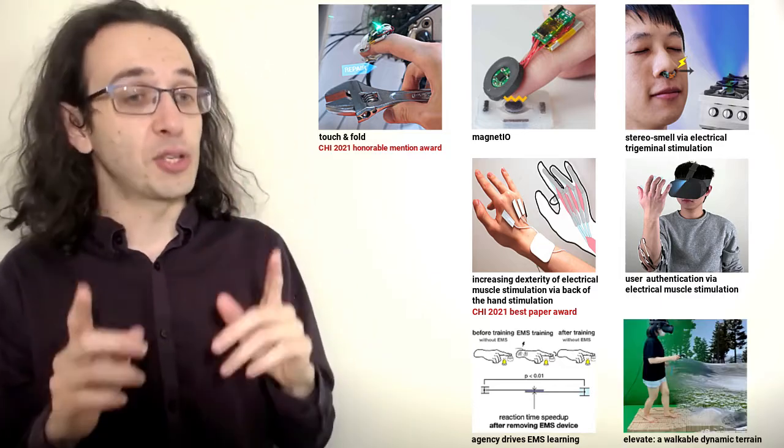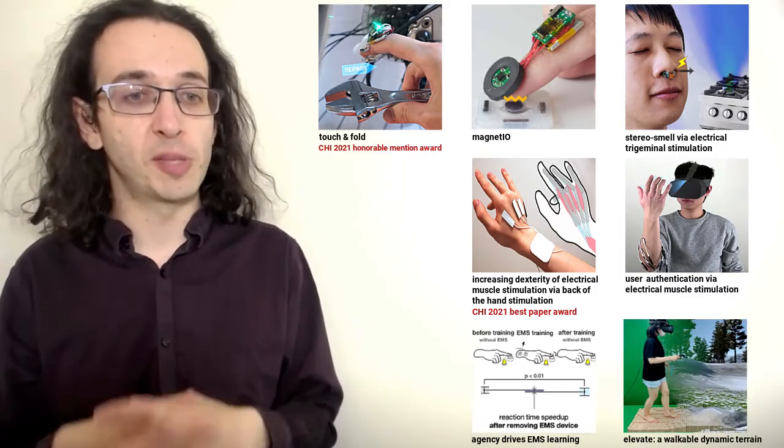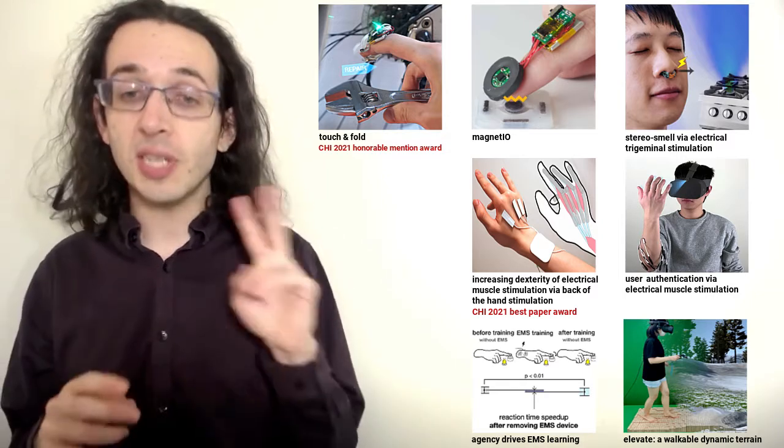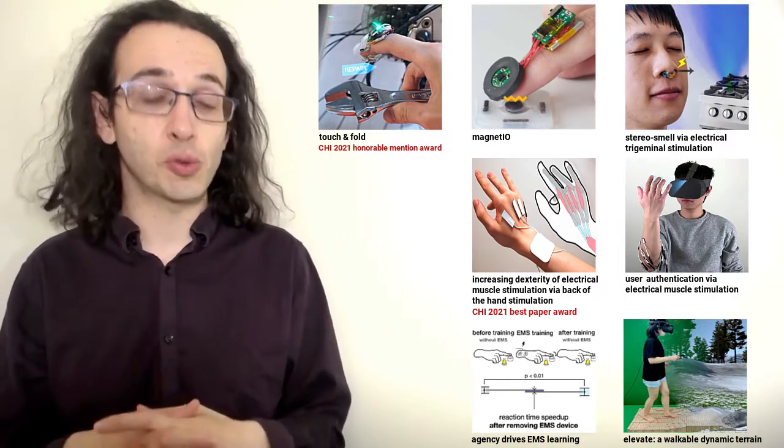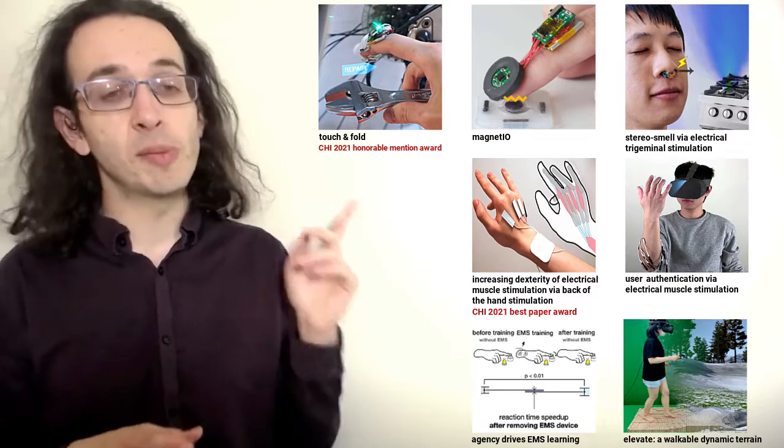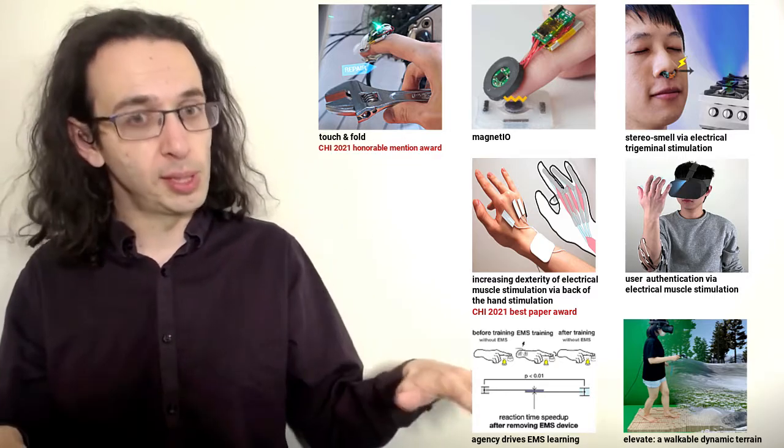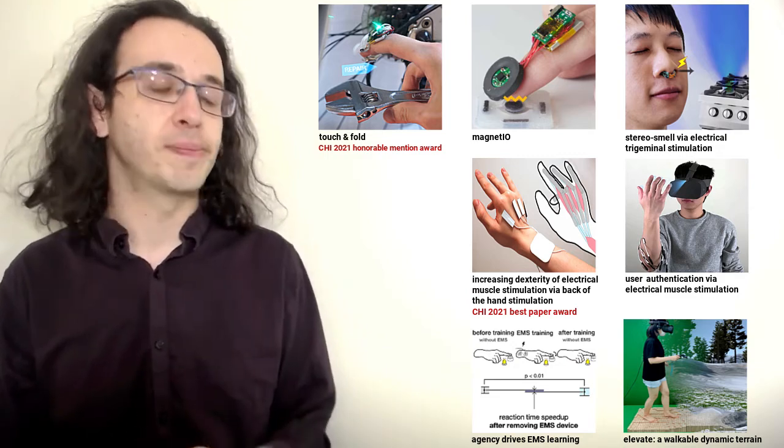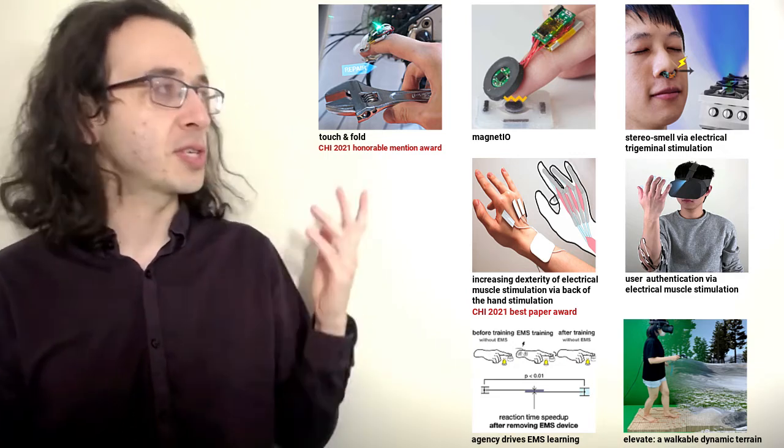Then our seventh and last paper which is presented by Senggyu Ji is called Elevate and this is our second collaboration with Andrea Bianchi's group at KAIST. Here we demonstrate how to engineer a floor that can dynamically change its terrain even as you walk on it. I hope you enjoy these presentations and these papers.